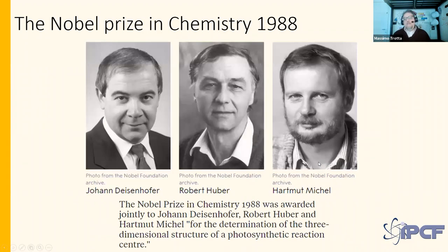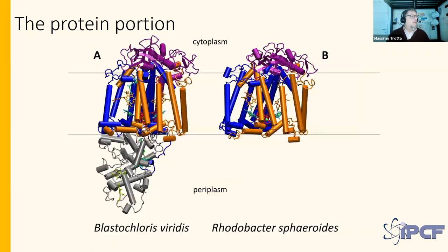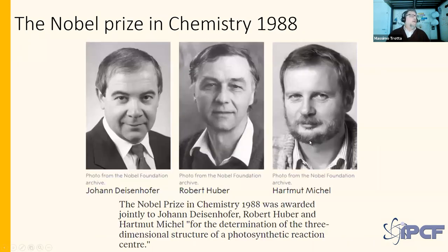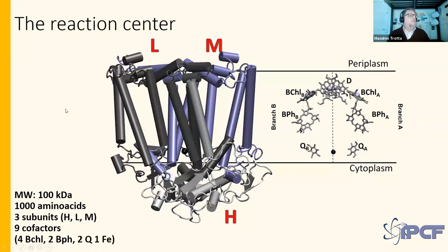I added this transparency because Julia used so many Nobel Prizes in her talk — we also have ours. The crystallization of the first photosynthetic protein was awarded to Deisenhofer, Huber, and Michel in 1988 for crystallizing the first integral membrane protein. They showed for the first time that you can crystallize a membrane protein — that's why they won the Nobel Prize.